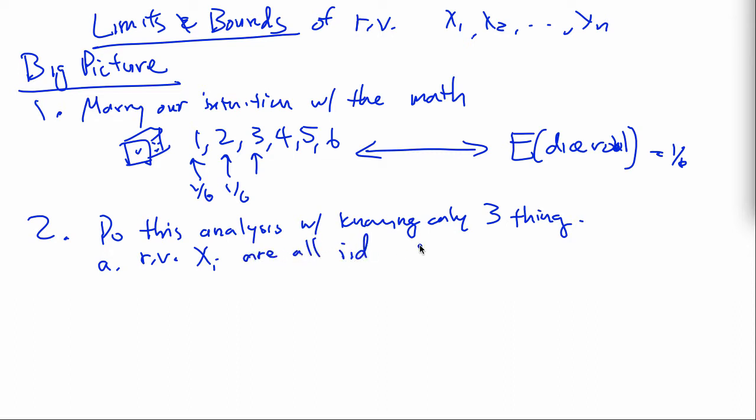Remember what iid was? Independent in that the manifestation of one random variable doesn't tell you any information about the other. And identically distributed. So basically they come from the same distribution, come from same place, roughly speaking.